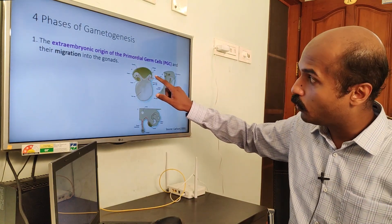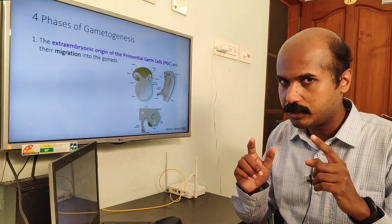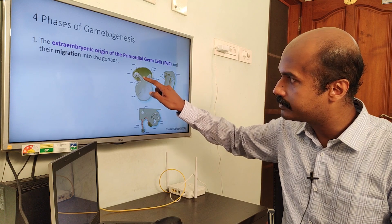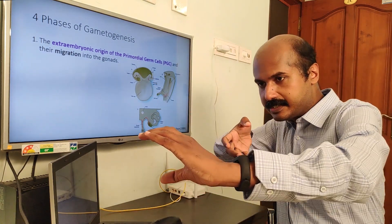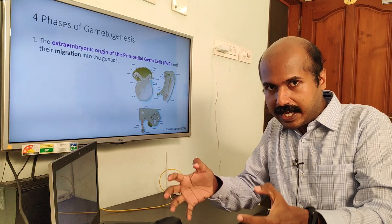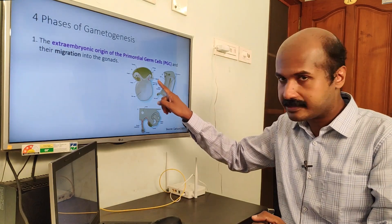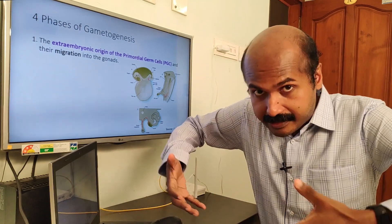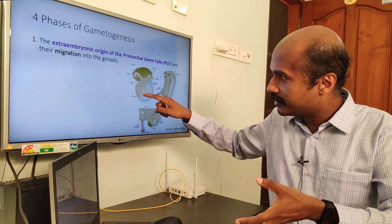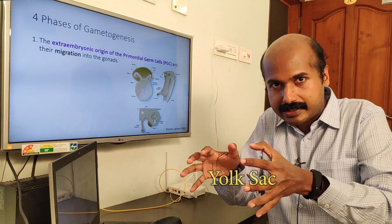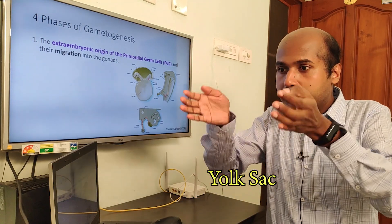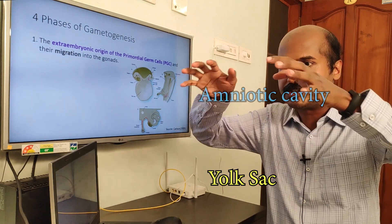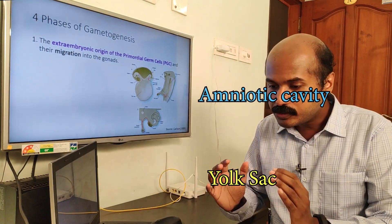Let's look at this image of when the parent was an embryo. This embryo is lying on its ventral side — this is the head and this is the tail end. On the ventral side is a structure called the yolk sac, like a balloon. On the dorsal side you have the amniotic cavity.